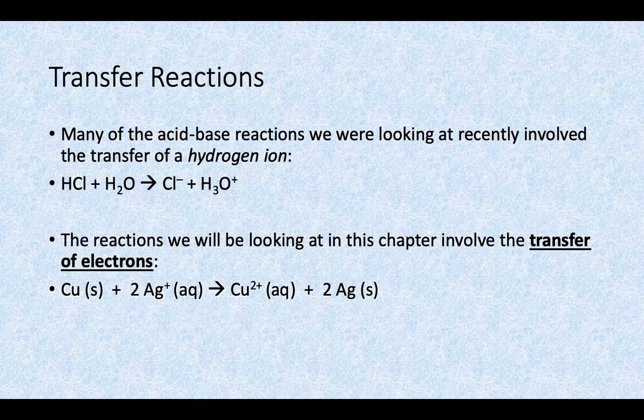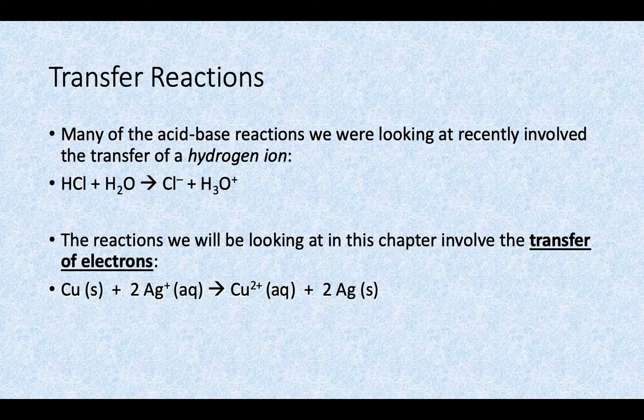But where did those electrons go? Well, silver starts with a charge of plus one as part of an ionic compound in solution, but on the right-hand side, silver is an element by itself — neutral. So it went from plus one to neutral; it gained an electron. And because there are two silver ions in solution, that happens twice. So the copper loses two electrons and the silver gains those two electrons — it's the same two electrons being transferred from one substance to another.